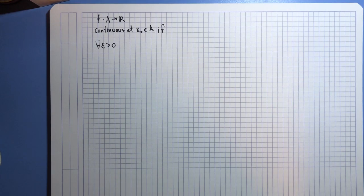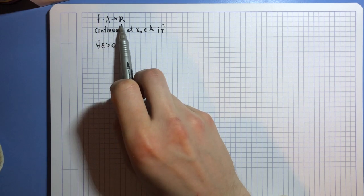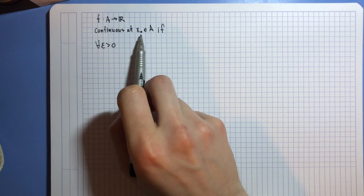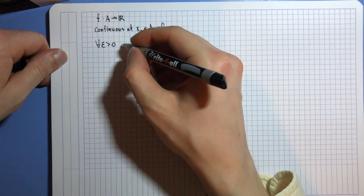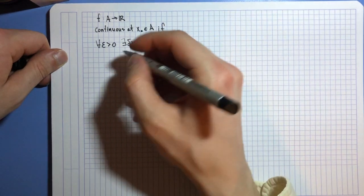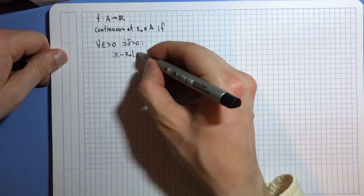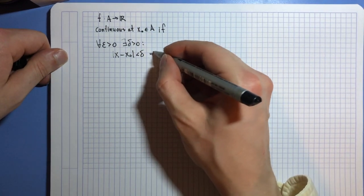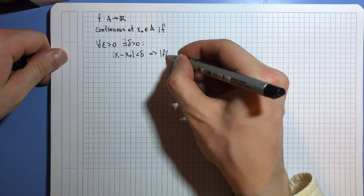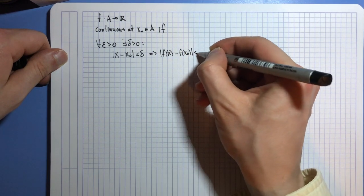Remember what you were told about continuity. Of course, you were told about the official definition. If you have a function from A to R, then it's continuous at x₀ if for all ε > 0, there is a δ > 0, such that whenever your point x is δ close to x₀, you know that the function value difference is less than ε.